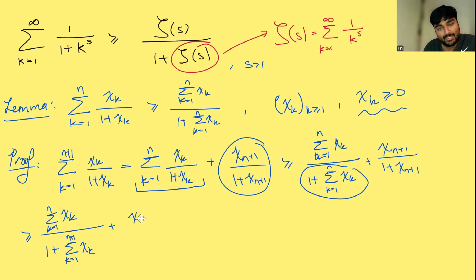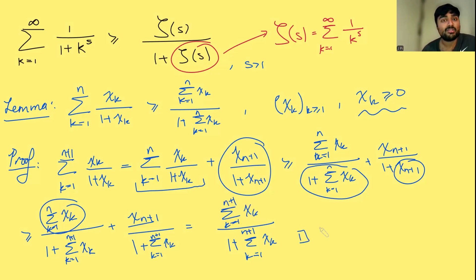I'm going to do something similar here. xn plus 1 over 1 plus, and again, xn plus 1 is definitely going to be smaller than the sum from k equals 1 to n plus 1 of xk, because this is adding other non-negative terms. And now they've got the same denominator. I can just put them together and I get the result. And the top, I've got the sum of the first n terms. I'm adding the n plus 1 term. So that's just going to be the sum from k equals 1 to n plus 1 of xk. And that proves my lemma by induction.